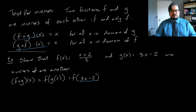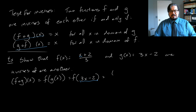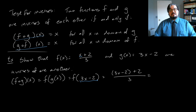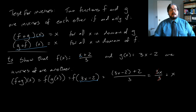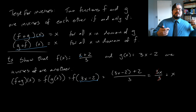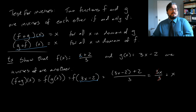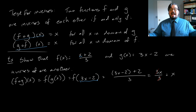Simplifying: 3x − 2 + 2 in the numerator becomes 3x, so we have 3x/3. The 3s cancel, leaving just x. That means if we apply g to x and then f to that result, we get back x — whatever g did, f undid. Now let's check g composed with f of x: g(f(x)) = g((x + 2)/3). We plug (x + 2)/3 into g to get 3 · (x + 2)/3 − 2.